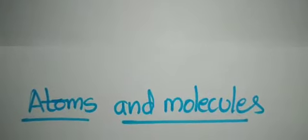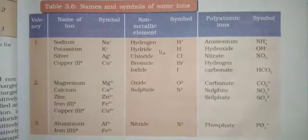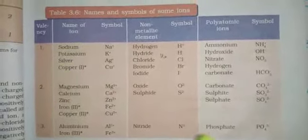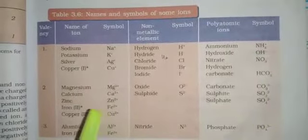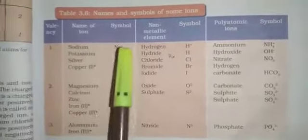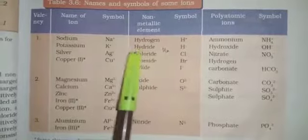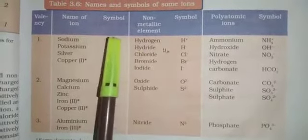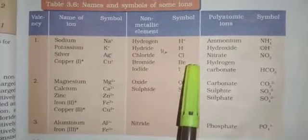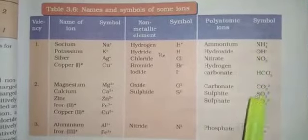Here they have given the valencies of some of the elements and some of the ions. For example, sodium — ions means there must be a positive or negative ion. Sodium has a positive charge since it is a metal, and some of the non-metals will have a negative charge. There are also some polyatomic ions.